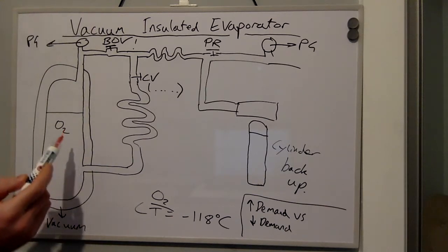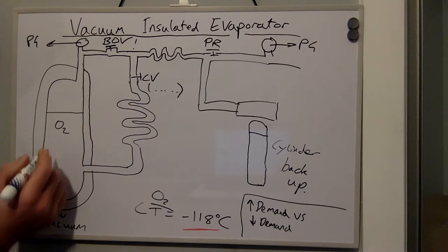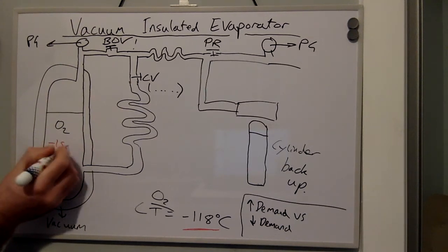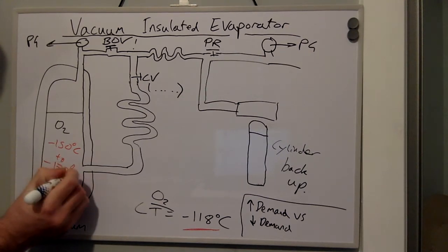We have oxygen in a vacuum insulated tank. The critical temperature of oxygen is minus 118 degrees. Therefore, the temperature of the liquid oxygen inside the tank is kept between minus 150 degrees centigrade to minus 170 degrees centigrade.